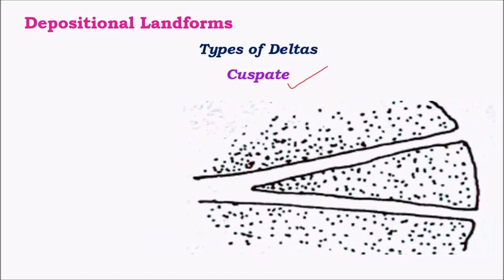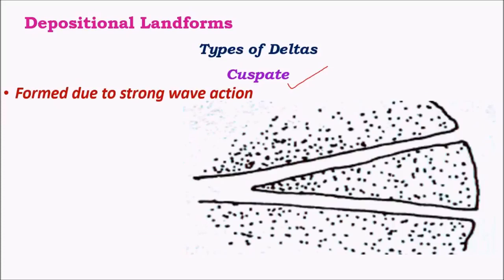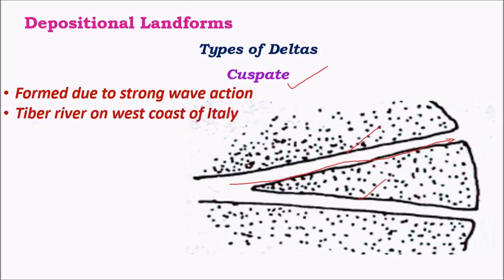The next depositional landform is the cuspate delta. During the formation of this delta, wave action or tidal action is very significant, hence a lot of silt is washed away into the sea. As most of the silt is washed away, there are few distributaries and the coast of the distributaries seems to be very straight due to easy flow of water with less accumulation of silt. A good example is the Tiber River on the west coast of Italy. These kinds of deltas are very rare in India.